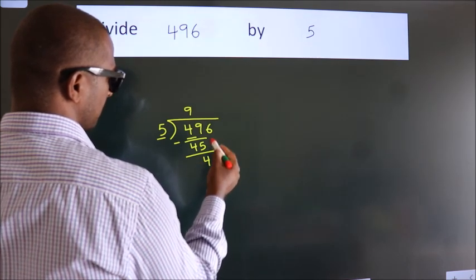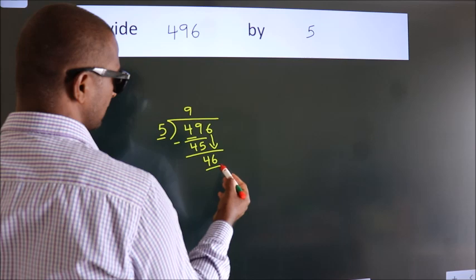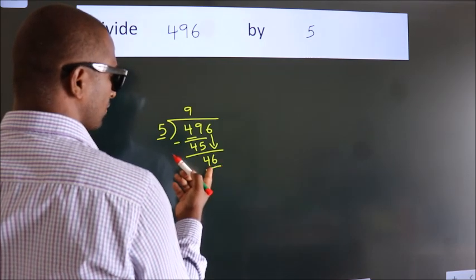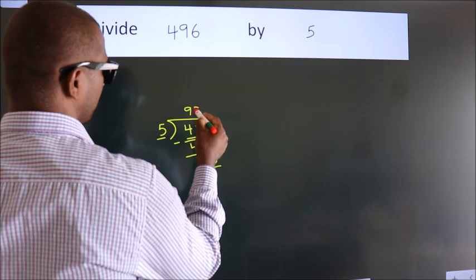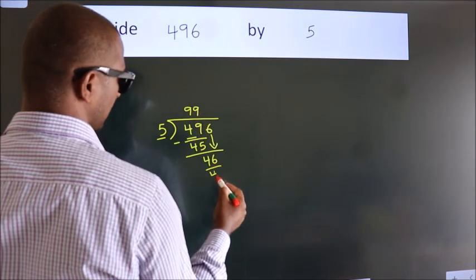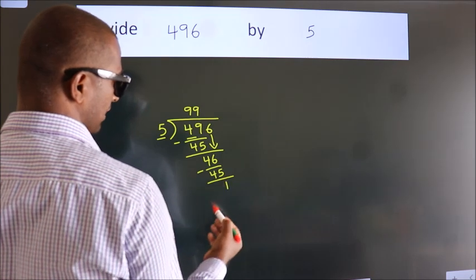After this, bring down the beside number. So 6 down. So 46. A number close to 46 in the 5 table is 5 nines, 45. Now we subtract. We get 1.